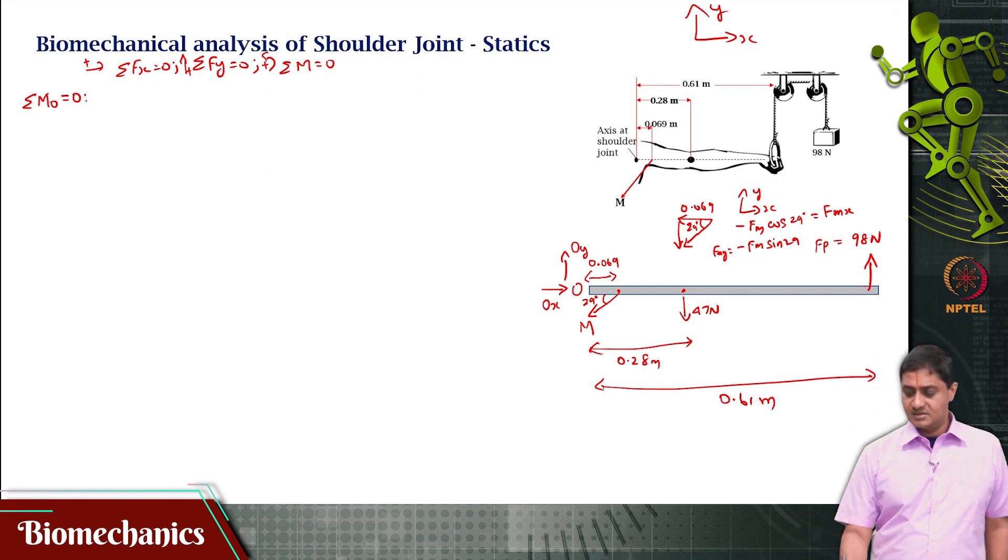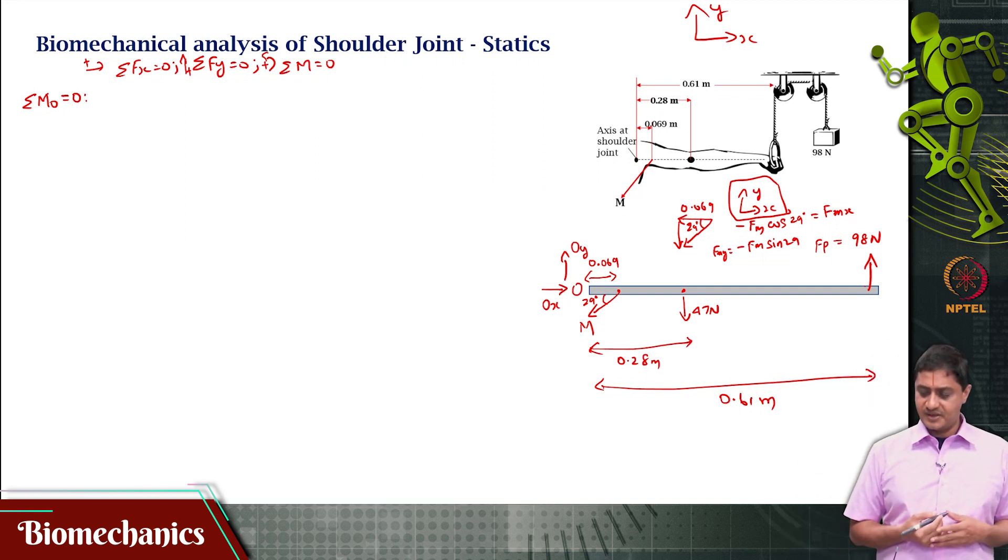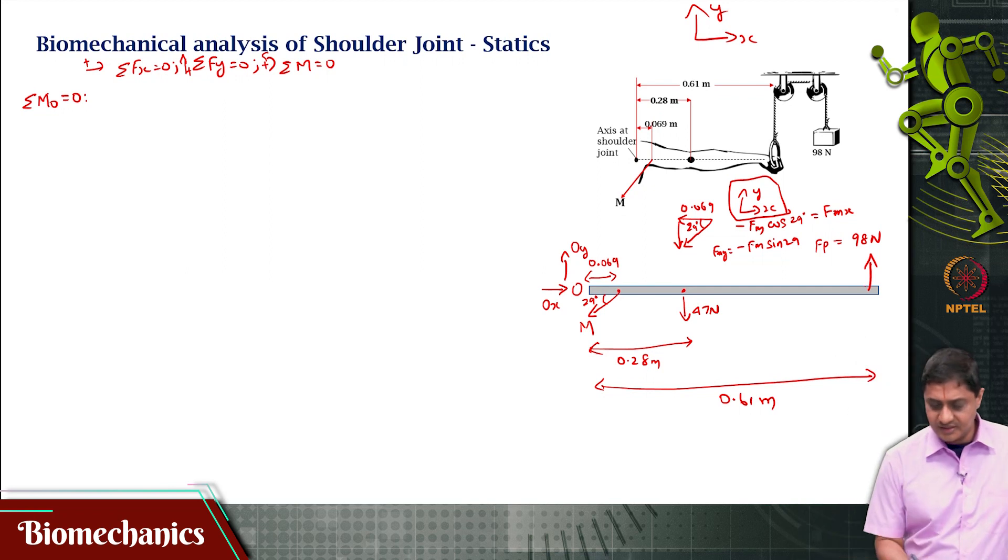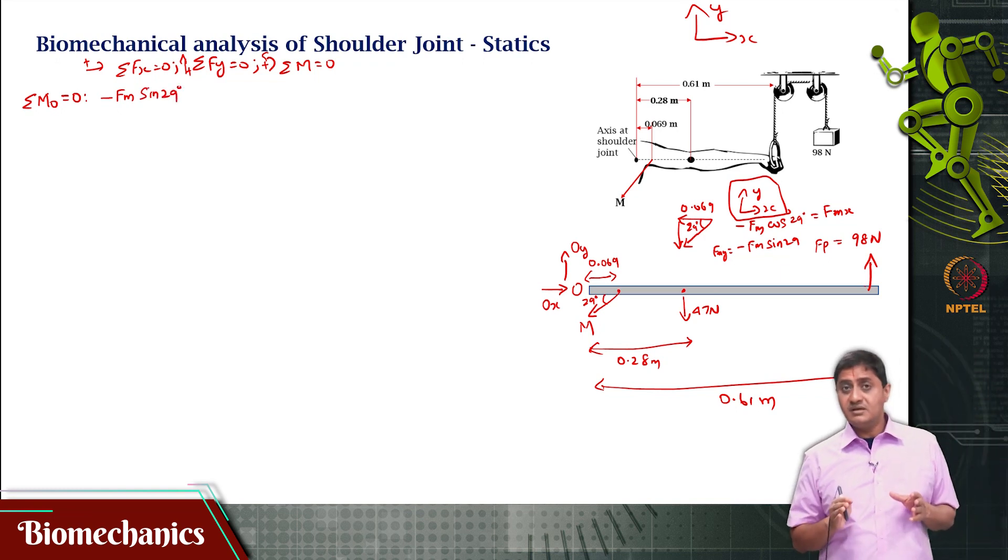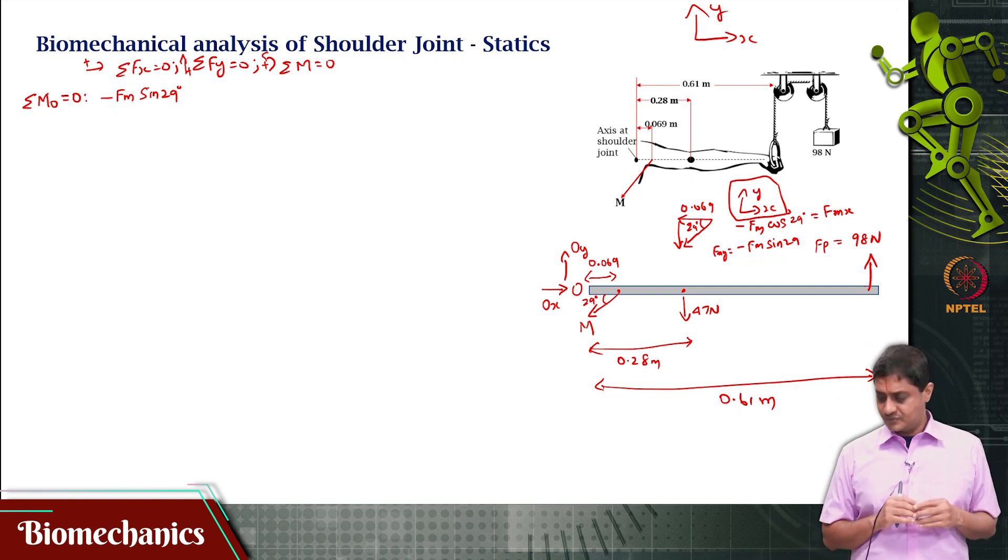For that, for this xy axis, this xy axis that we are looking at. Anyhow, let us write out that equation sigma m o equal to 0 and expand it. We will find that this is minus fm sin 29, because only the vertical component of this muscle force will cause a moment, not the horizontal component, because horizontal component will act along o.